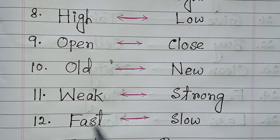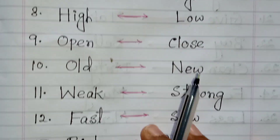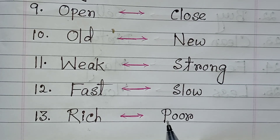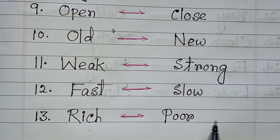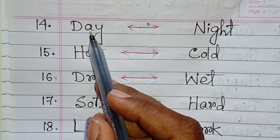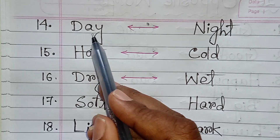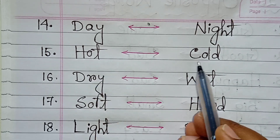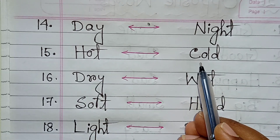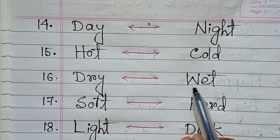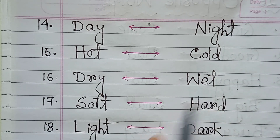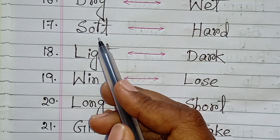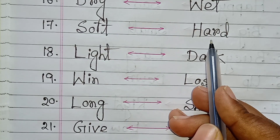Fast, slow. Rich, poor. Day, night. Hot, cold. Dry, wet. Soft, hard.